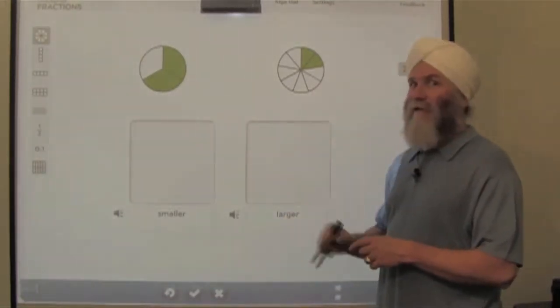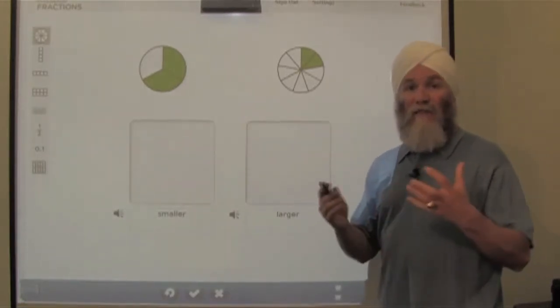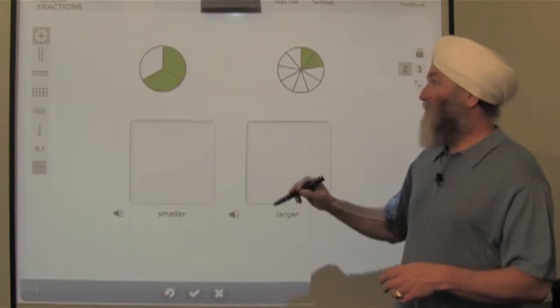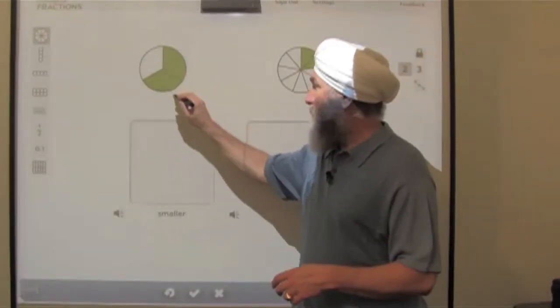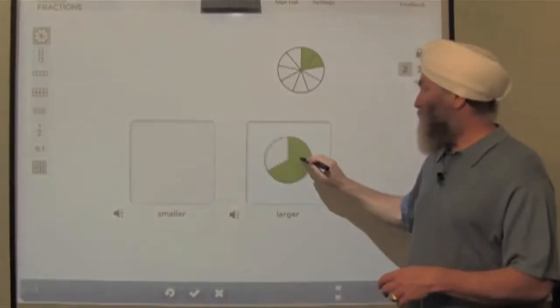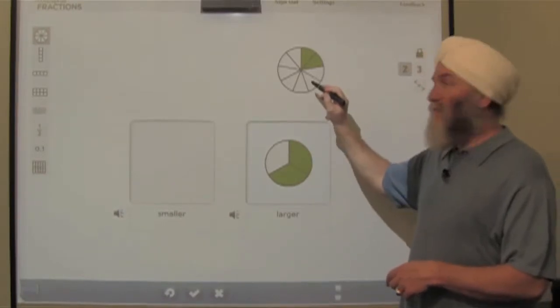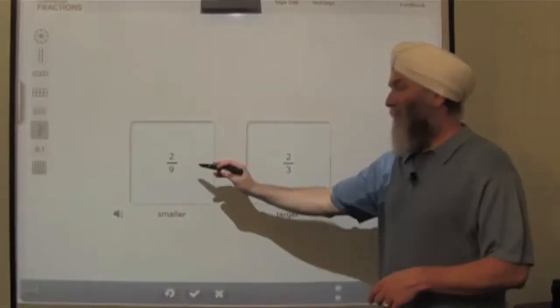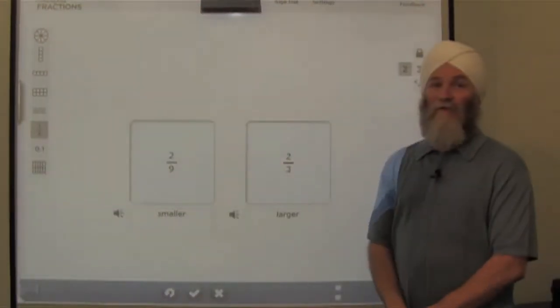Two-thirds is clearly larger than two-ninths. Thirds are larger parts, ninths are smaller parts. So we take the two-thirds and we move it into the larger box, and we take the two-ninths and we put it into the smaller box. Two-ninths is smaller than two-thirds.